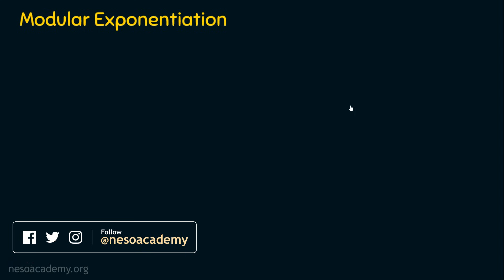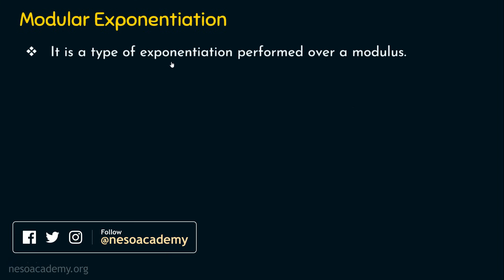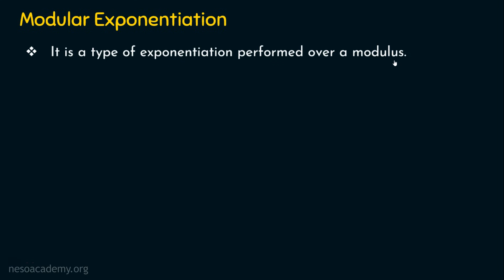What is modular exponentiation? The name itself says that we are going to have mod and we are going to have an exponent. Obviously, it is a type of exponentiation performed over a modulus. It's not simply x power y we are going to calculate; rather, we are going to calculate x power y mod m. In other words, we calculate a power b mod m, or this can be represented as (a power b) mod m.